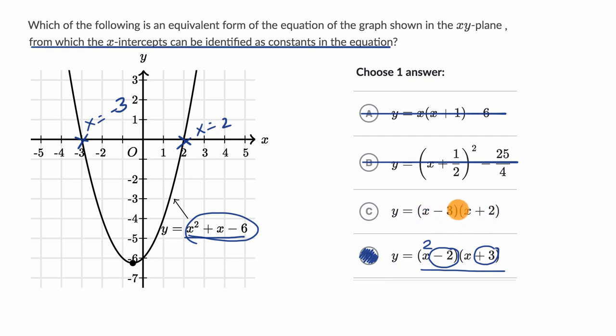but this is actually a different equation than what we have over here. And you would see here that the x-intercepts would be at x equals three and x equals negative two, not negative three and positive two. So we'd rule that one out as well.